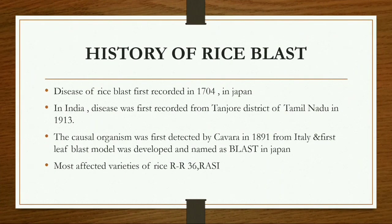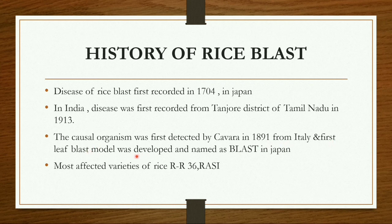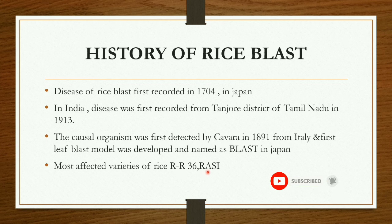Let us discuss the history of rice blast. The disease was first recorded in Japan in the 17th century. In India, it was first recorded from Tanjore district of Tamil Nadu in 1913. The causal organism was first detected by Cavara in 1891 from Italy. The first leaf blast model was developed and named as blast in Japan. The most affected varieties of rice include R-R36 and Rasi.